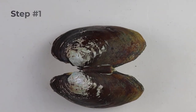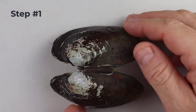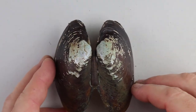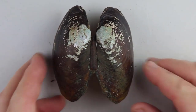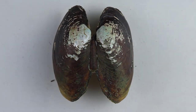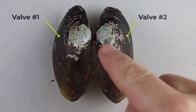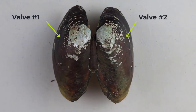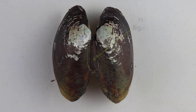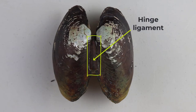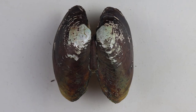The first step is to identify the dorsal part of the shell. The dorsal part of the shell is where the two valves are attached. You can see these two valves are still attached by the hinge ligament. The hinge ligament is always located in the dorsal region of the shell, but sometimes the hinge ligament is gone and the shells are separated from one another when you find it in the river.